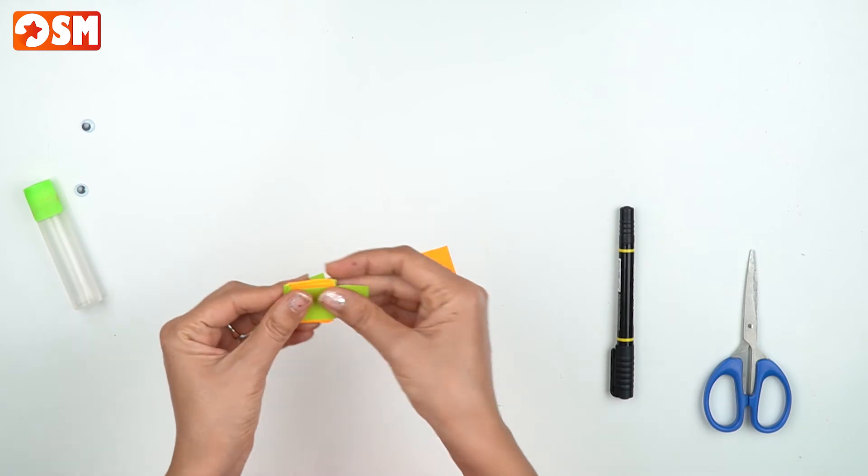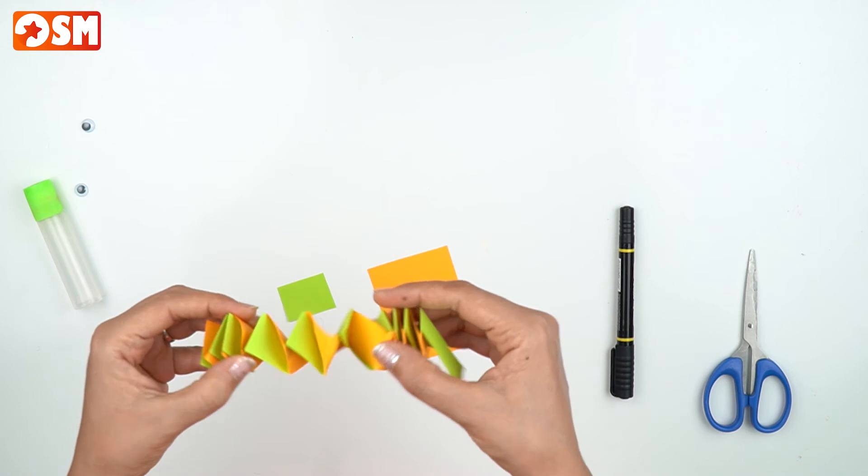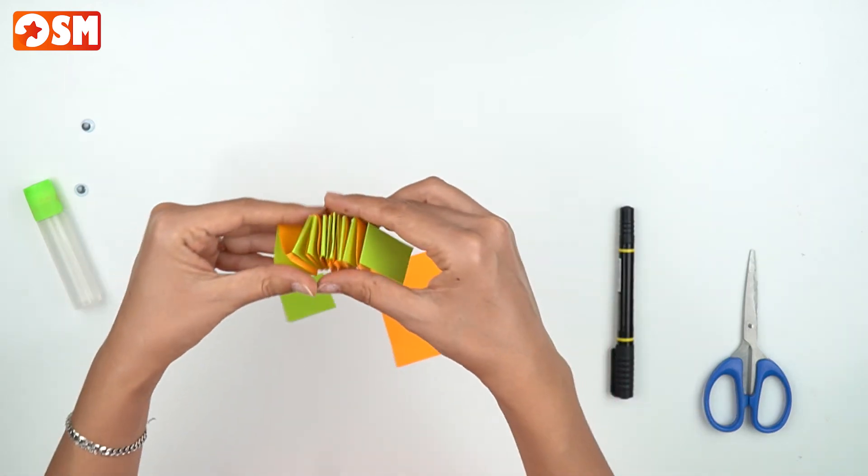Alright, now it's time to draw and cut out all other snake shapes. As you see the body is done, now it's time for the head and the tongue.